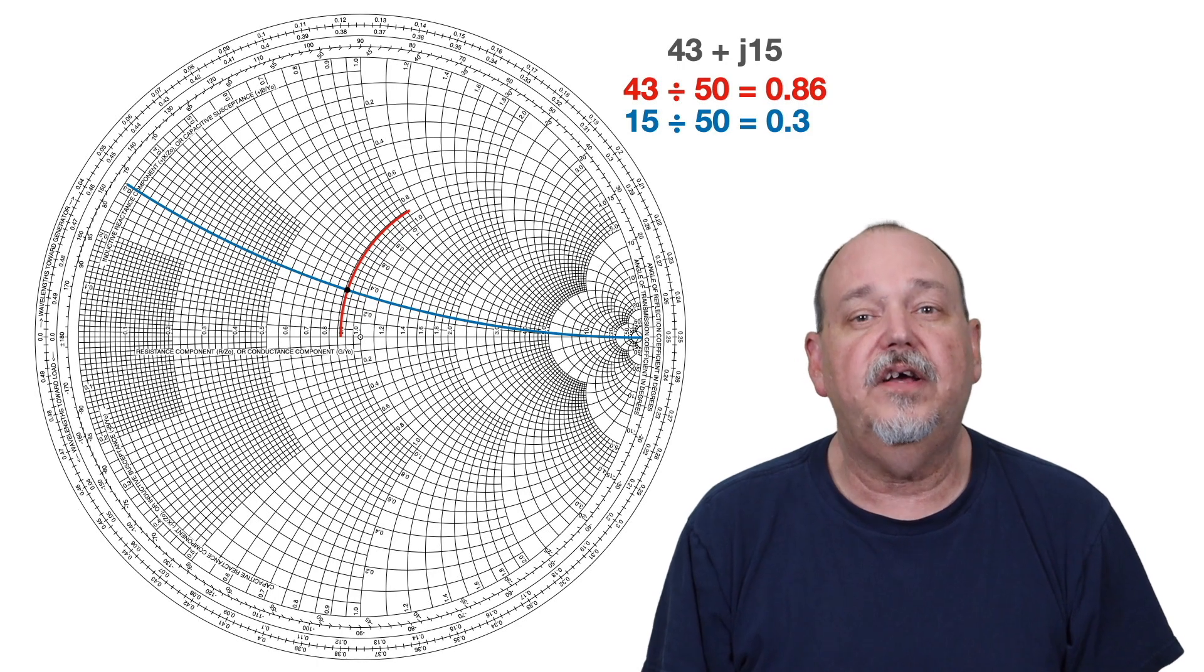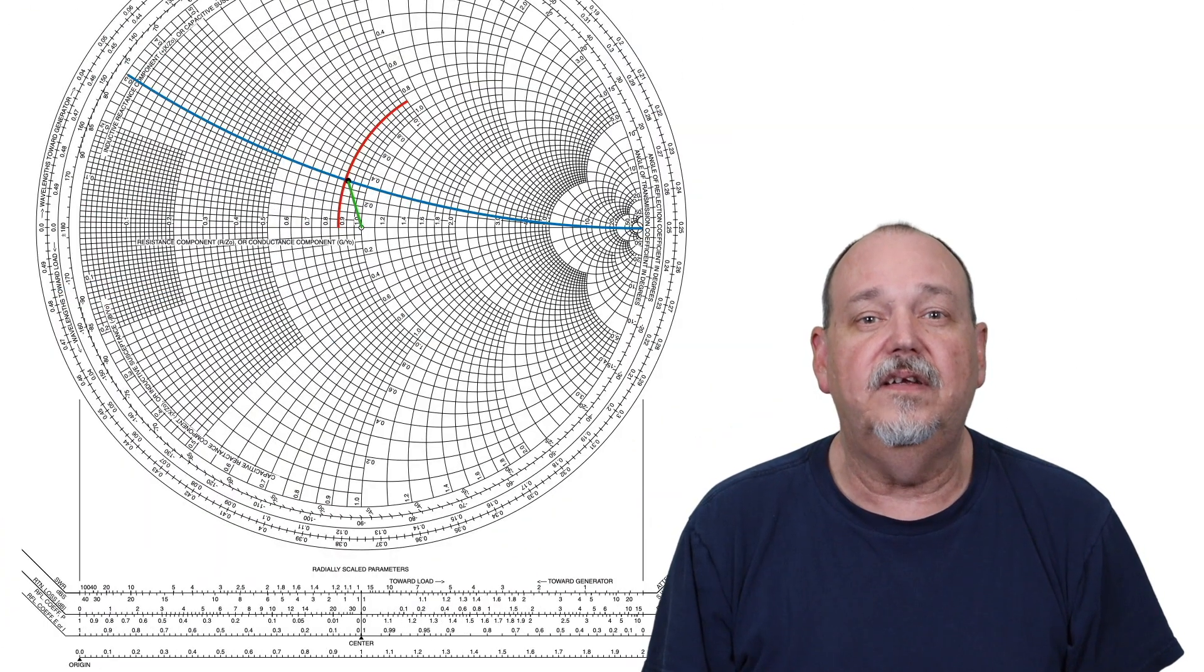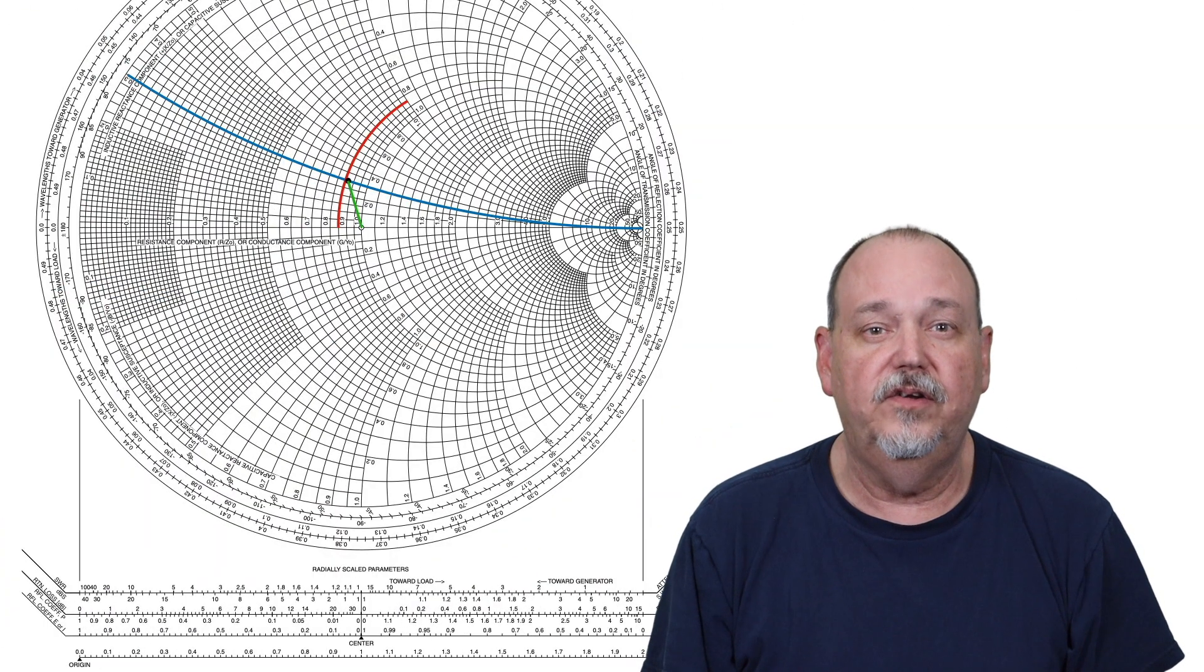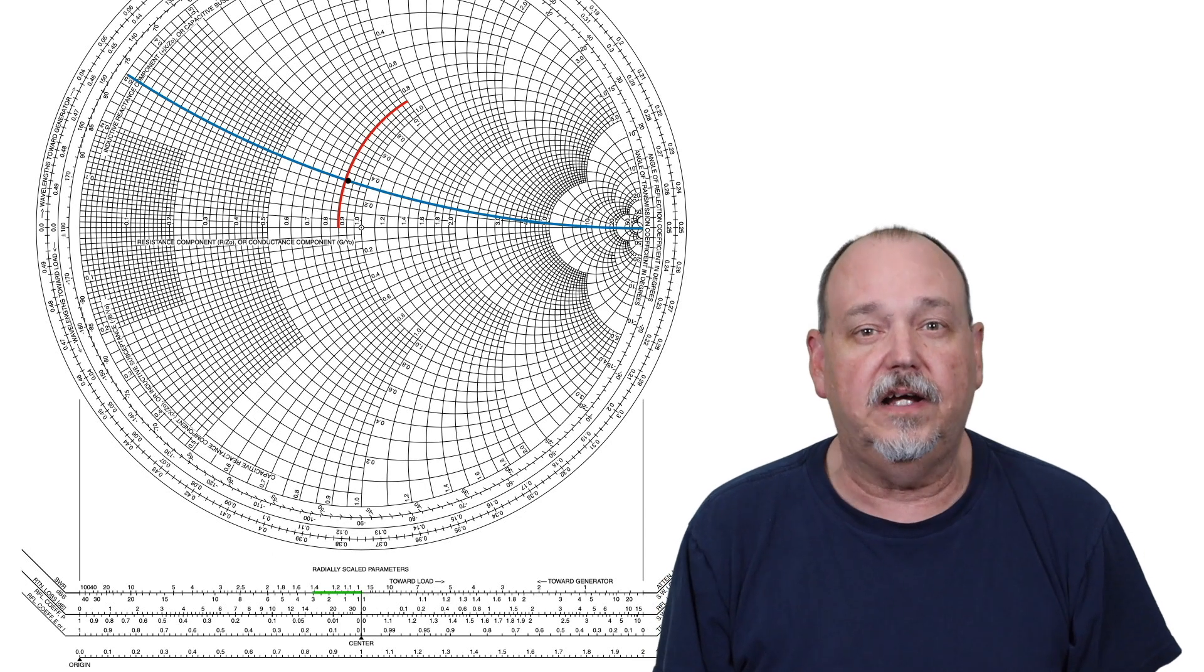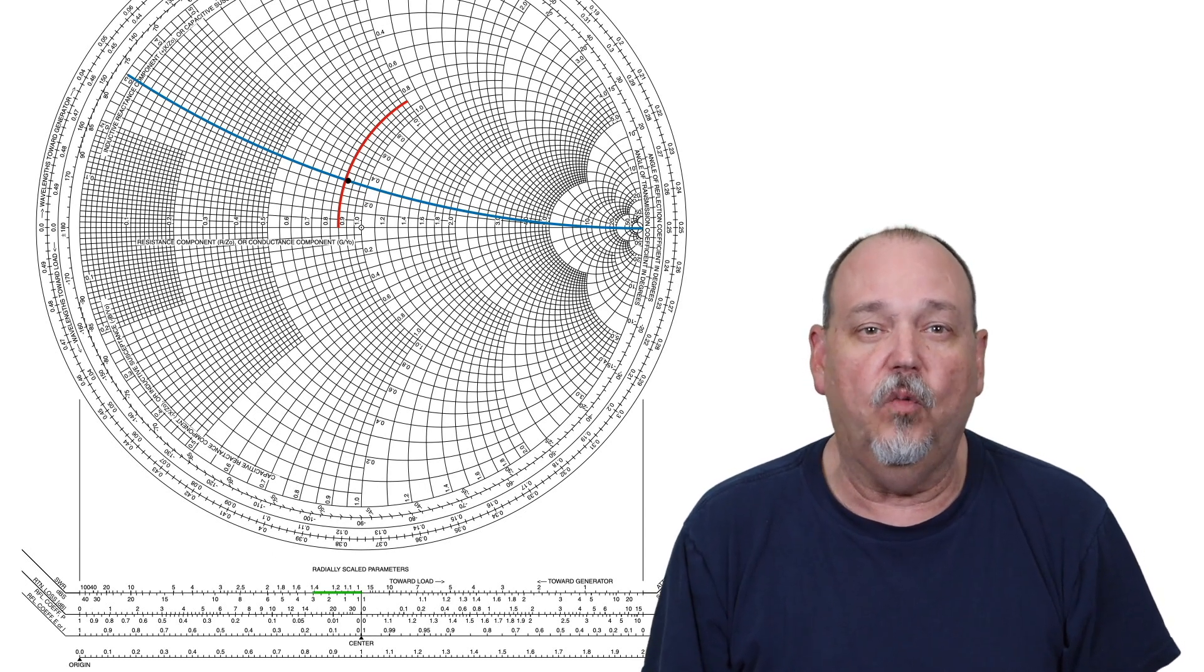Now, to measure our SWR, we take the distance from the prime center to our point, and we transfer that line down to the SWR portion at the bottom of our Smith chart, and voila, we have our SWR of about 1.4 to 1.